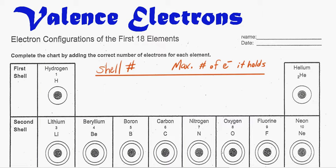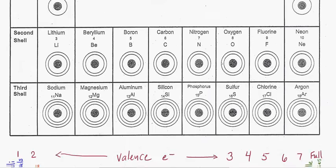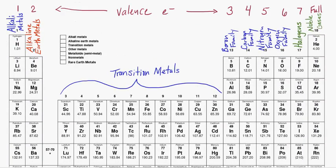In this video, we're going to talk about valence electrons, how to find them, and why they're important. So what we're going to look at first is, we'll go down here to the full periodic table.